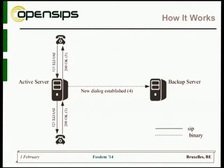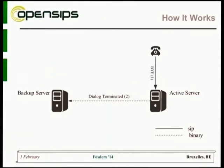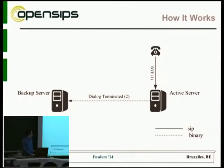Here's how it works: when the user dials the phone and the callee picks up, the active server sends via this binary interface a message to the backup server that the dialogue has been established. Later, if you want to do maintenance and switch your floating IP, when the user terminates the call the now-active server will tell the now-backup server that the dialogues have terminated. All the time, both servers are perfectly in sync without relying on anything else.